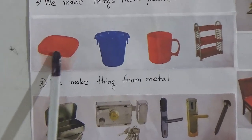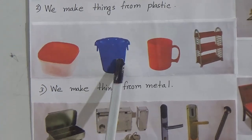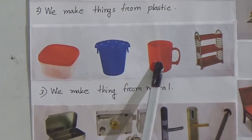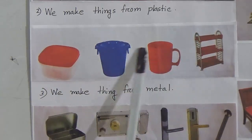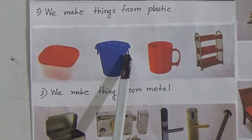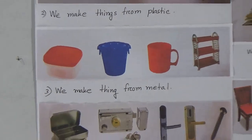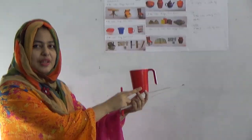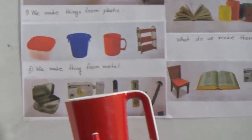Point number two: we make things from plastic. Here is a box — this is made from plastic. Here is a bucket — this is made from plastic. And here is a red mug — this is also made from plastic. I have another thing to show you: this is a plastic mug, just like in your picture.